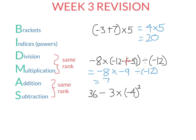Negative 8 times negative 9 is positive 72. Then I divide this answer by negative 12. Two negatives multiplied together give a positive — that's why it was positive 72. But if you have a positive divided by a negative, the answer is negative. So 72 divided by 12 is 6, and the answer is negative 6. And we're done.